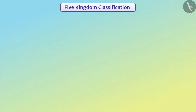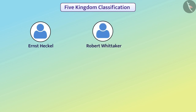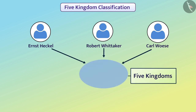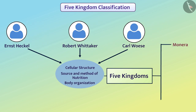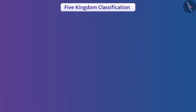Scientists Ernest Haeckel, Robert Whittaker, and Carl Woese divided all living organisms into five kingdoms based on cellular structure, sources and methods of nutrition, and body organization. The five kingdoms are Monera, Protista, Fungi, Plantae, and Animalia.